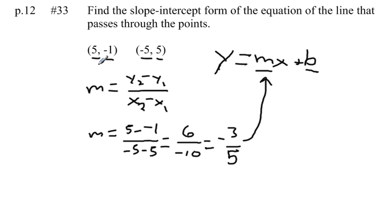So I can pick either one of these points. Let's pick this first point here and plug in 5 for x, negative 1 for y, and negative 3 fifths for m. So that gives me y equals mx plus b. Negative 1 equals negative 3 fifths times x, which is equal to 5, plus b.